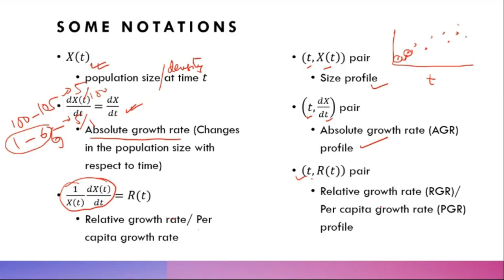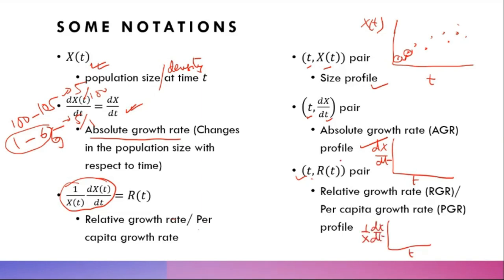The per capita growth rate or relative growth rate (RGR) is considered a very useful measure for understanding the behavior and status of species in real life. When measuring species, we usually model their per capita growth rate. In growth literature, the plot of t versus r(t) is called the RGR or PGR profile. So these are three key plots: t vs x(t), t vs dx/dt, and t vs (1/x)(dx/dt).